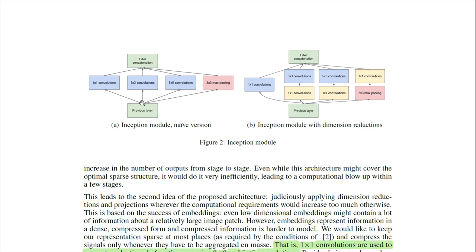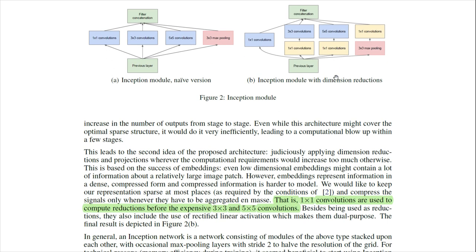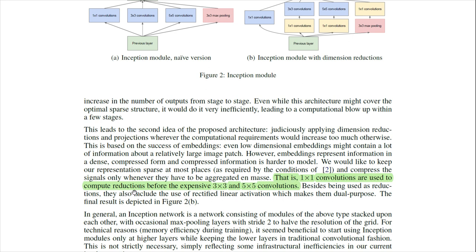The inception block takes a previous layer and tries all of them: a 1x1 conv, a 3x3 conv, a 5x5 conv, and a 3x3 max pooling. It takes all those results, concatenates them, and that's the next layer. To address the expense of 5x5 convolutions, they add a 1x1 conv before the 3x3 and 5x5 convs. The 1x1 convolution reduces the number of filters - for example, from 200 filters down to 50 - so the subsequent convolution only works on those 50 filters.